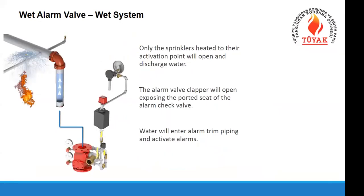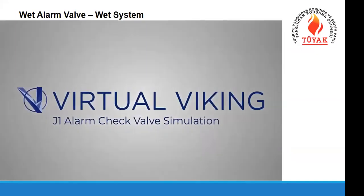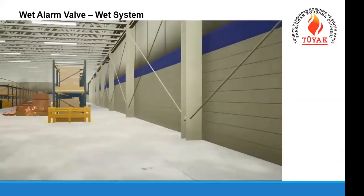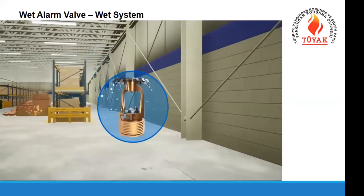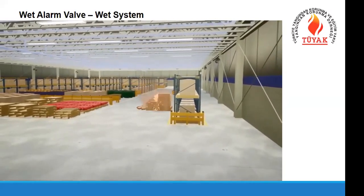The purpose of this valve is to get an alarm from the system and also to test the system before a fire happens. We want the system to inform us when a fire happens or a sprinkler operates, giving either a mechanical or electrical alarm. In the animation: a fire has started in the building. As the fire grows and the heat reaches the rated temperature, the sprinkler activates. Since this is a wet system, water is already in the pipes, allowing immediate delivery of water to the fire.